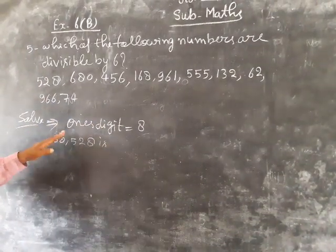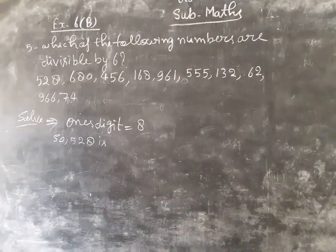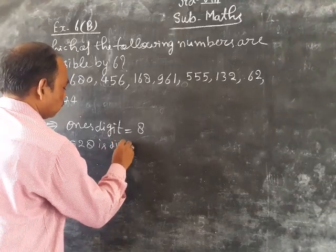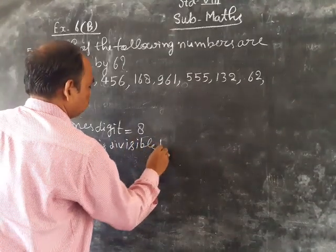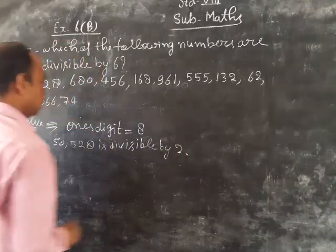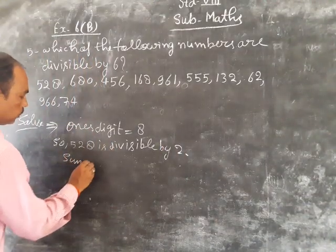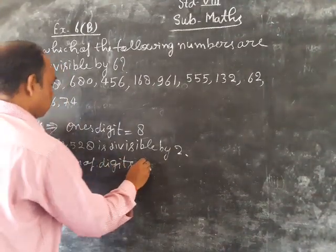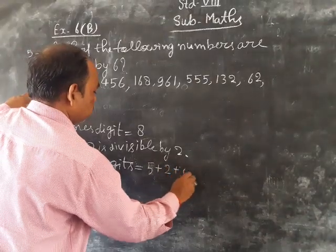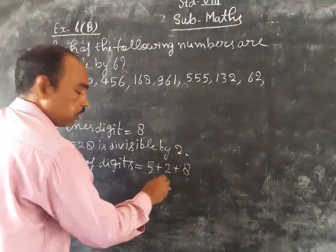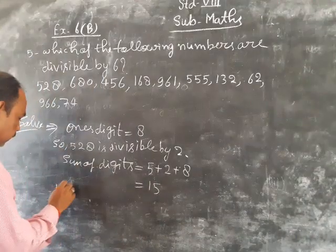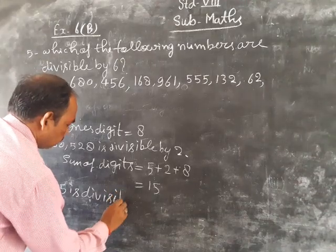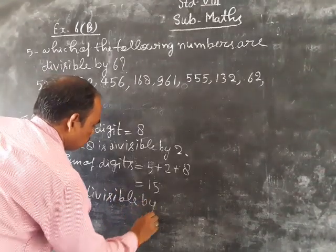Ones digit equals 8. So 528 is divisible by 2. Next, divisible by 3. Sum of digits equals 5 plus 2 plus 8, which is 15. So 528 is divisible by 3.